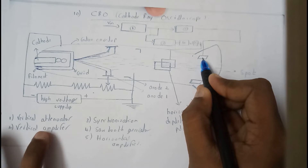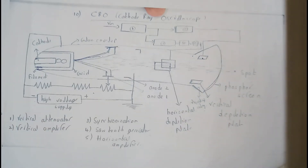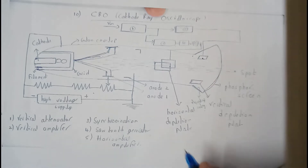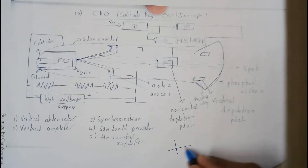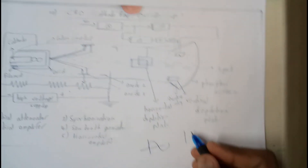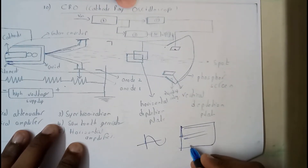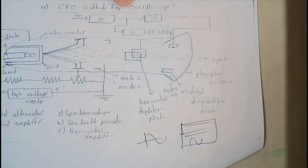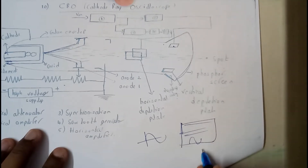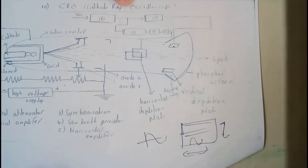I hope everyone has done an experiment on the CRO — we did oscillators on CRO in our first and second semesters. If the given graph is appearing down on the display, to change it vertically we use the vertical knobs, and to change it horizontally we use the horizontal knobs. Horizontal means moving along the x-axis, vertical means moving along the y-axis.